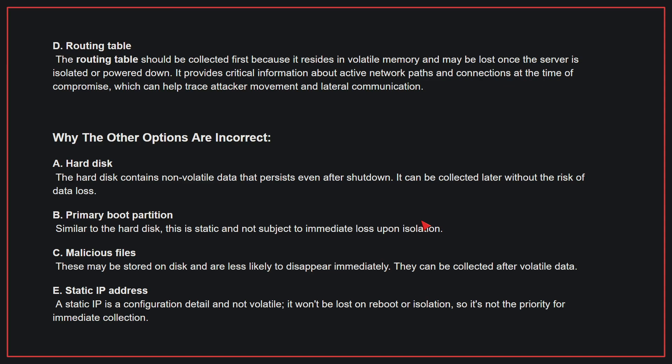Why the other options are incorrect? A: Hard disk. The hard disk contains non-volatile data that persists even after shutdown, so it can be collected later without the risk of data loss. B: Primary boot partition. Similar to the hard disk, this is static and not subject to immediate loss upon isolation. C: Malicious files. These may be stored on disk and are less likely to disappear immediately; they can be collected after volatile data. E: Static IP address. A static IP is a configuration detail and not volatile — it won't be lost on reboot or isolation, so it's not the priority for immediate collection. Therefore, the correct answer is D.